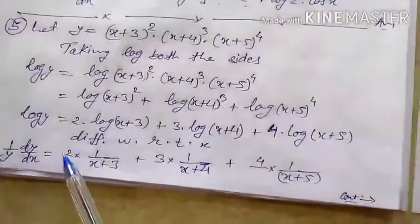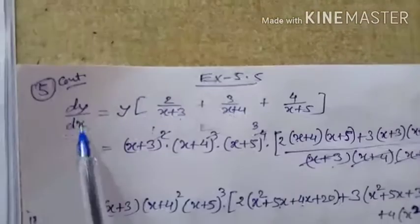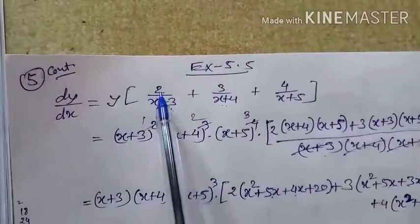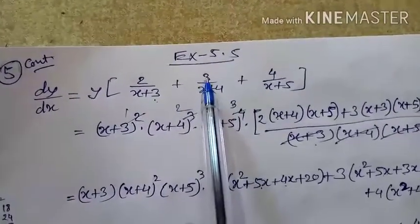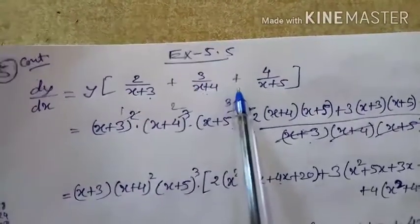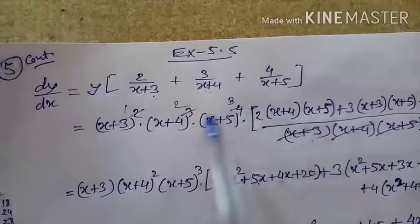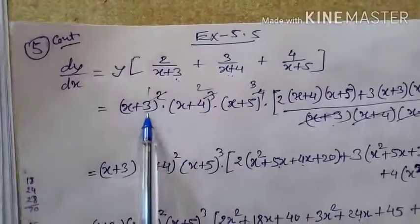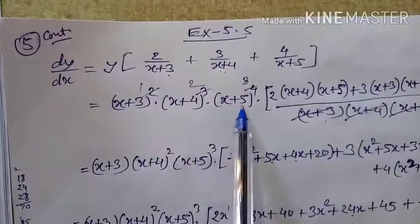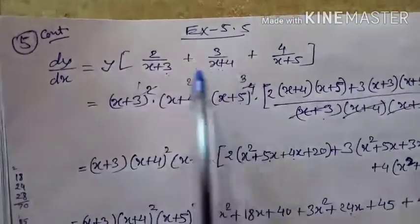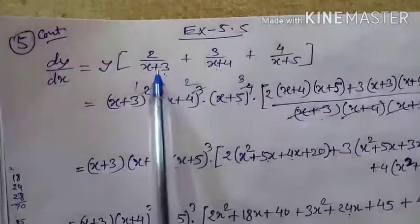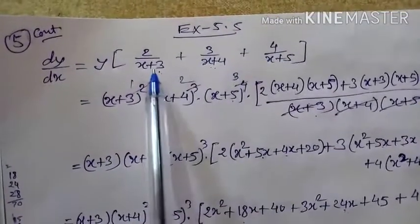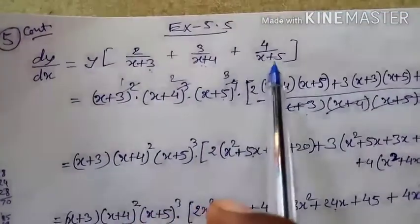Transferring y to the right side: dy/dx = y · [2/(x+3) + 3/(x+4) + 4/(x+5)]. Now replacing y with (x+3)²·(x+4)³·(x+5)⁴, and taking the LCM of the three fractions. The LCM is (x+3)·(x+4)·(x+5).